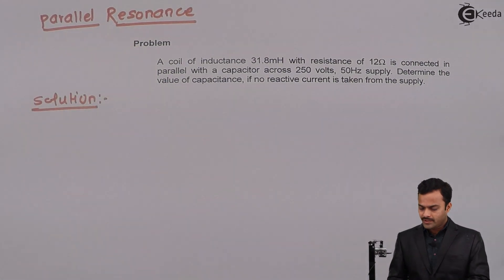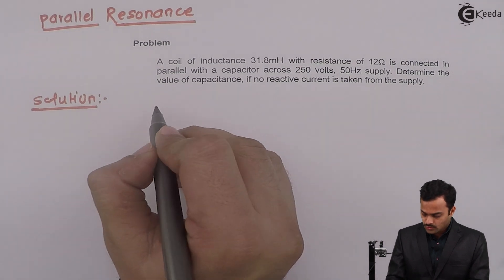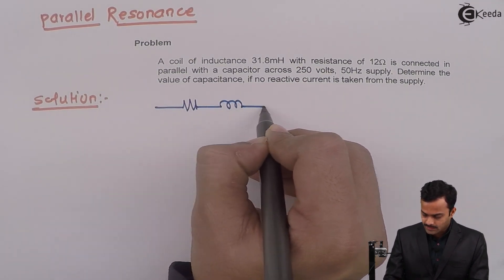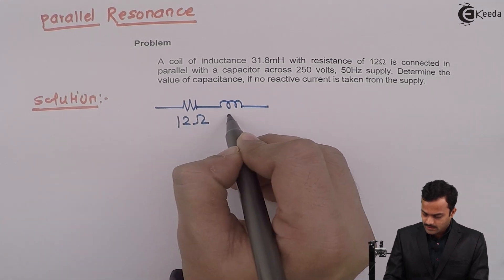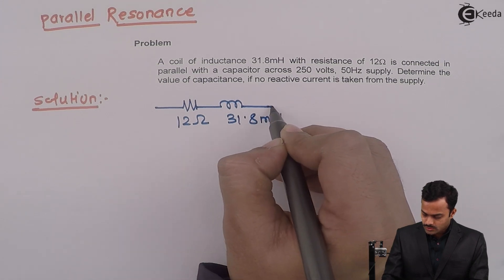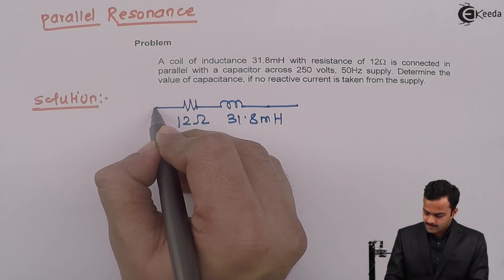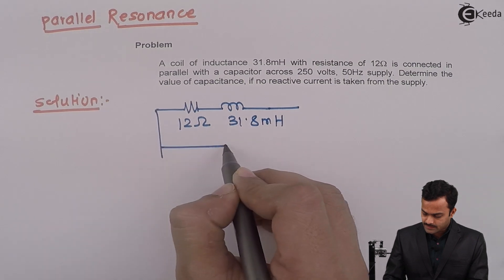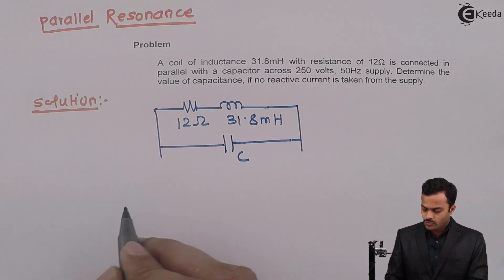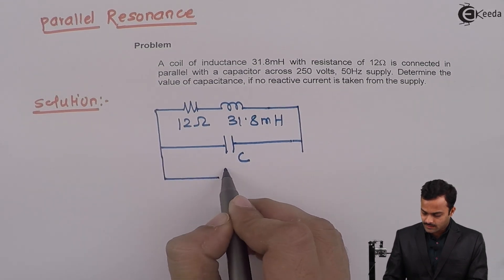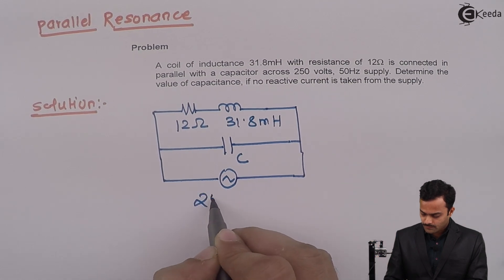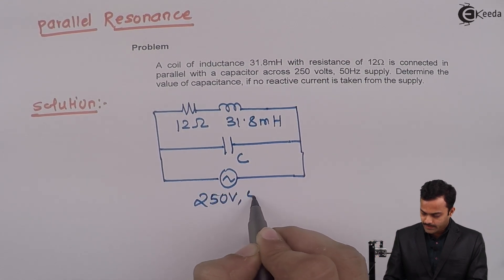Here what they have given? A coil. So coil is nothing but a resistance in series with inductance. The resistance is 12 ohm, inductance is 31.8 mH. This coil is connected in parallel with a capacitor whose value we are supposed to find out.